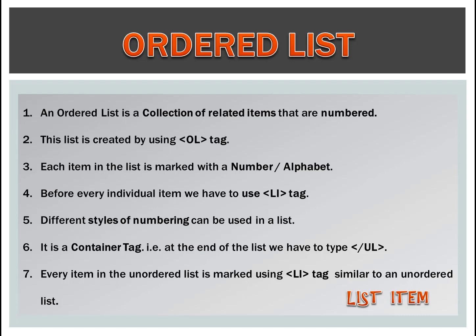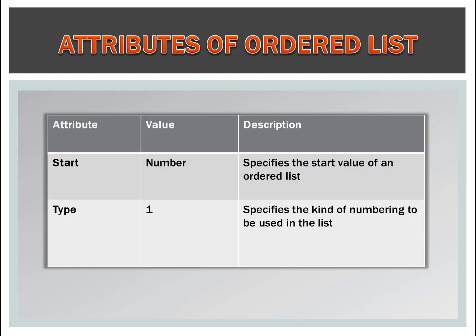At the end of the list we have to type slash ol. Every item in the ordered list is marked using the li tag, similar to an unordered list. The attributes of the ordered list are: first is 'start' — it specifies the start value of an ordered list. Second is 'type' — it specifies the kind of numbering to be used in a list. So let's do a practical.